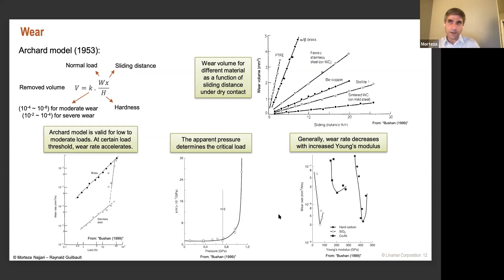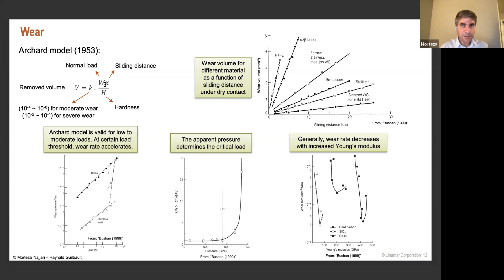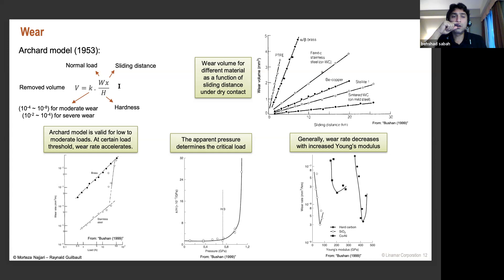A major model for wear comes from Archard. He described the removed volume from wear as a linear relationship of normal load, sliding distance, and hardness — specifically the hardness of the softer material, since the softer material wears off first. He defined an empirical adhesive wear coefficient: for moderate wear, it ranges from 10⁻⁸ to 10⁻⁴; for severe wear, from 10⁻⁴ to 10⁻².